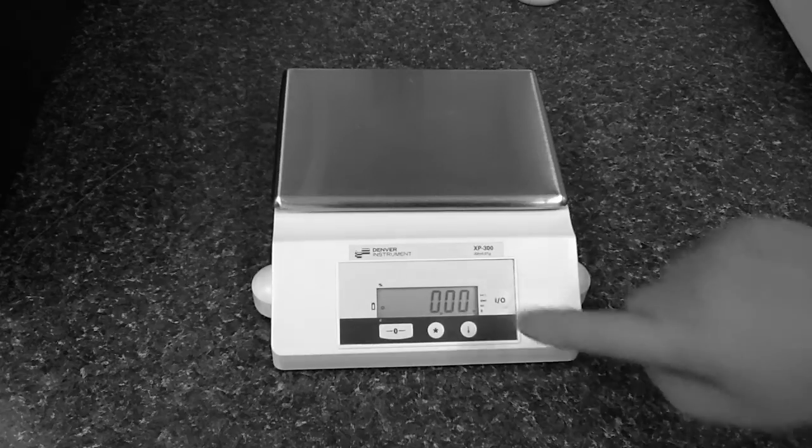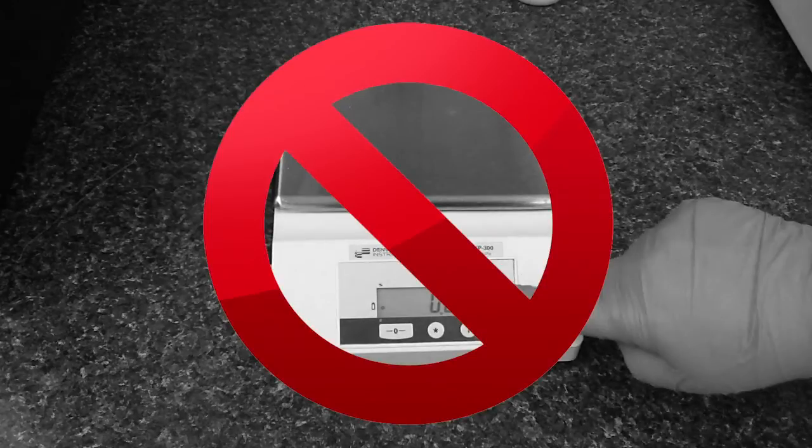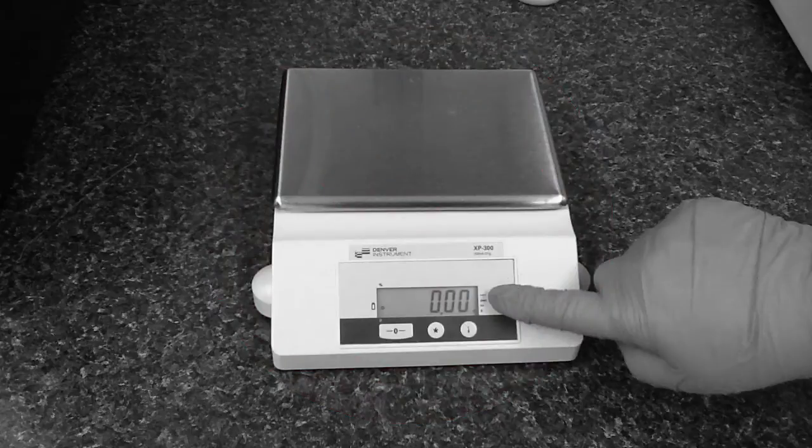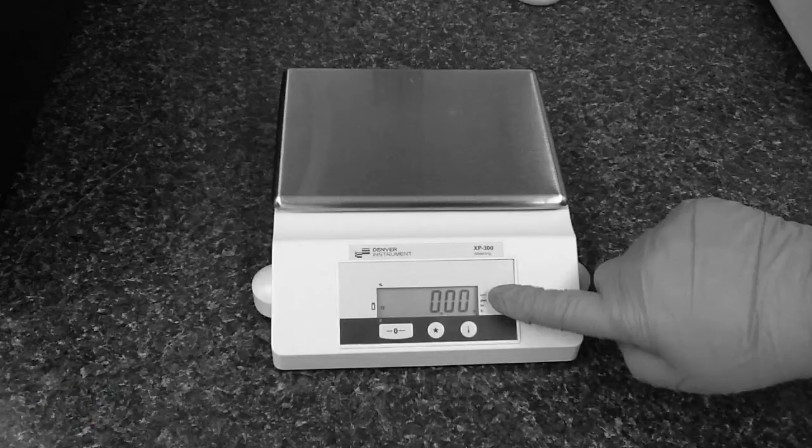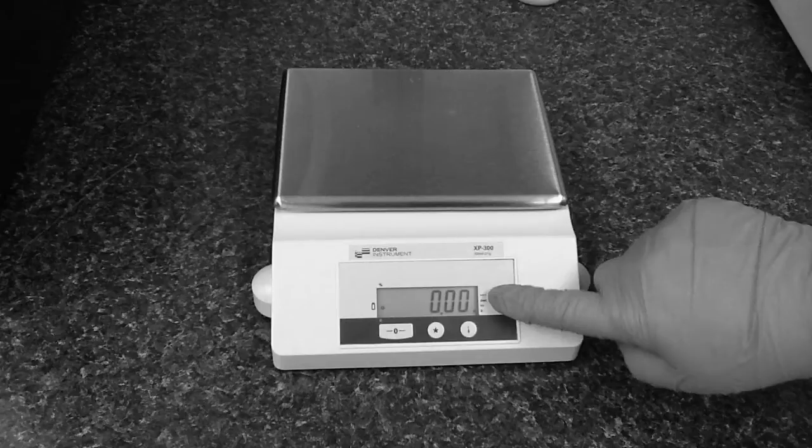Tip number two, skip weighing the flask. I usually skip the weighing and re-weighing step because typically if you don't have a boil over, you won't lose too much buffer in the microwaving process and it won't make a big difference during the running of your gel if your TAE concentration is slightly over 1x.